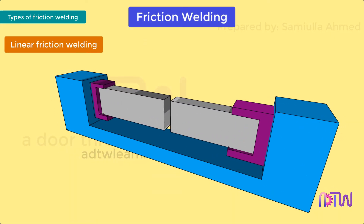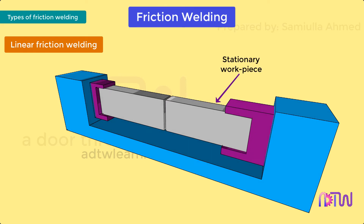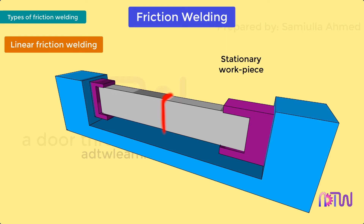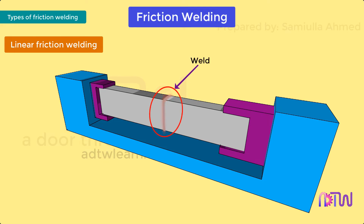Linear friction welding: one piece is held stationary while another piece oscillates at a very high frequency relative to the stationary workpiece. This vibration at the interface generates heat, and oxides or contaminants on the surface are displaced and burned off due to friction. The heat also causes the two pieces to heat up and diffuse into each other, causing them to weld together.